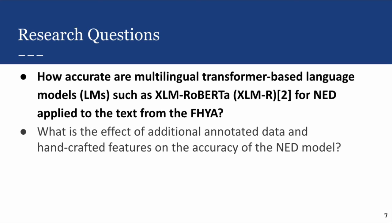In doing this research we're trying to answer the following research questions. How accurate are multilingual transformer-based language models for named entity disambiguation when applied to text from the 500-year archive? The 500-year archive is a collection of historical artifacts from the last 500 years of South African history. For this project we'll be mainly focusing on digitized texts within the archive as well as the metadata records stored for each of the artifacts.